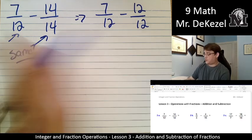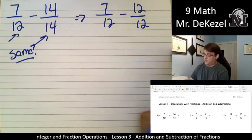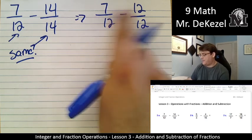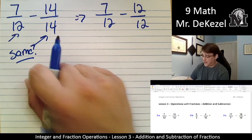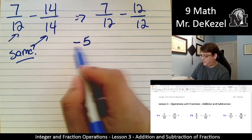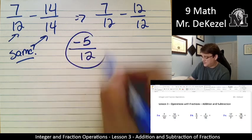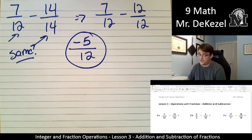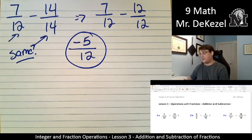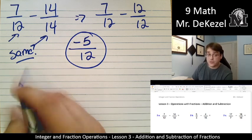And then we're just going to subtract across the top and leave the bottom the same. We leave the denominator the same. So 7 minus 12 is minus 5. And then 12 just stays, and our answer is negative 5 twelfths. So we make the denominators the same, and then we subtract or we add across the numerator. Let's do the next one.